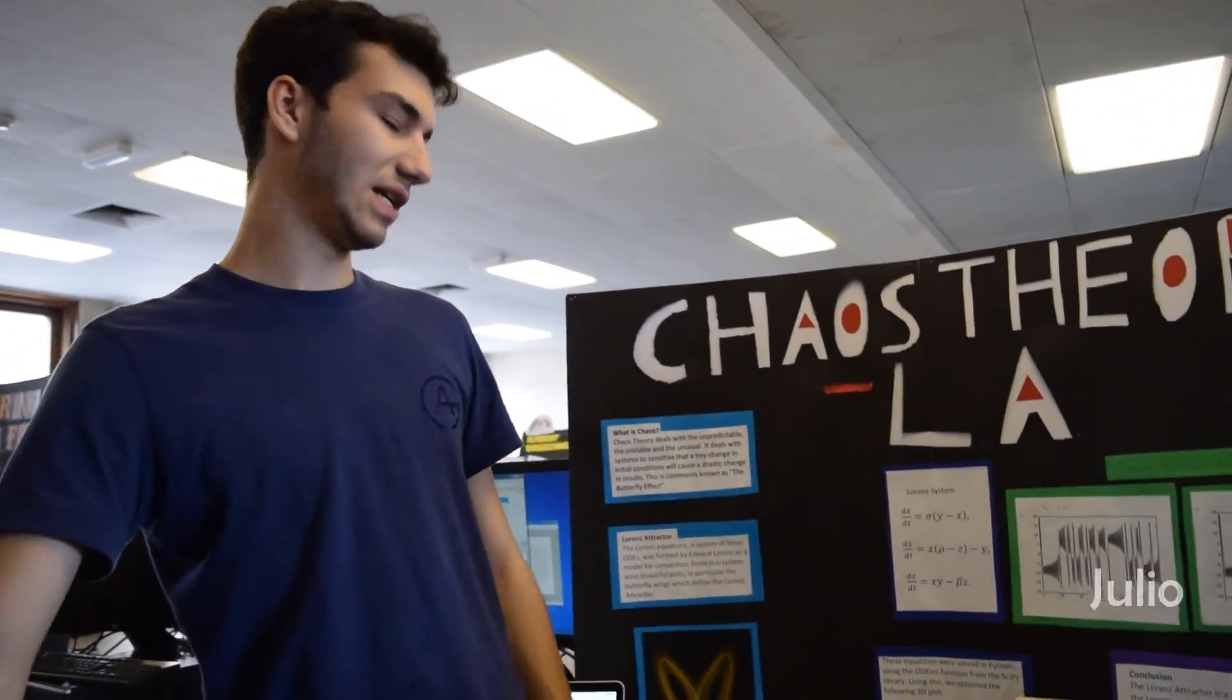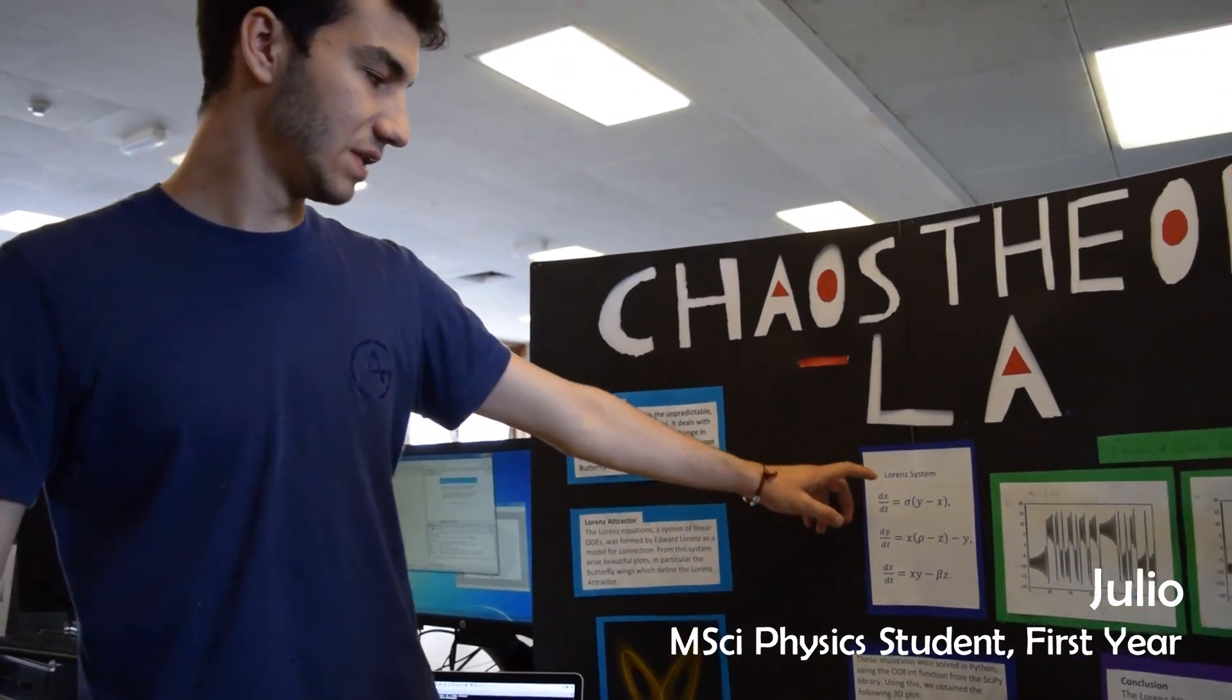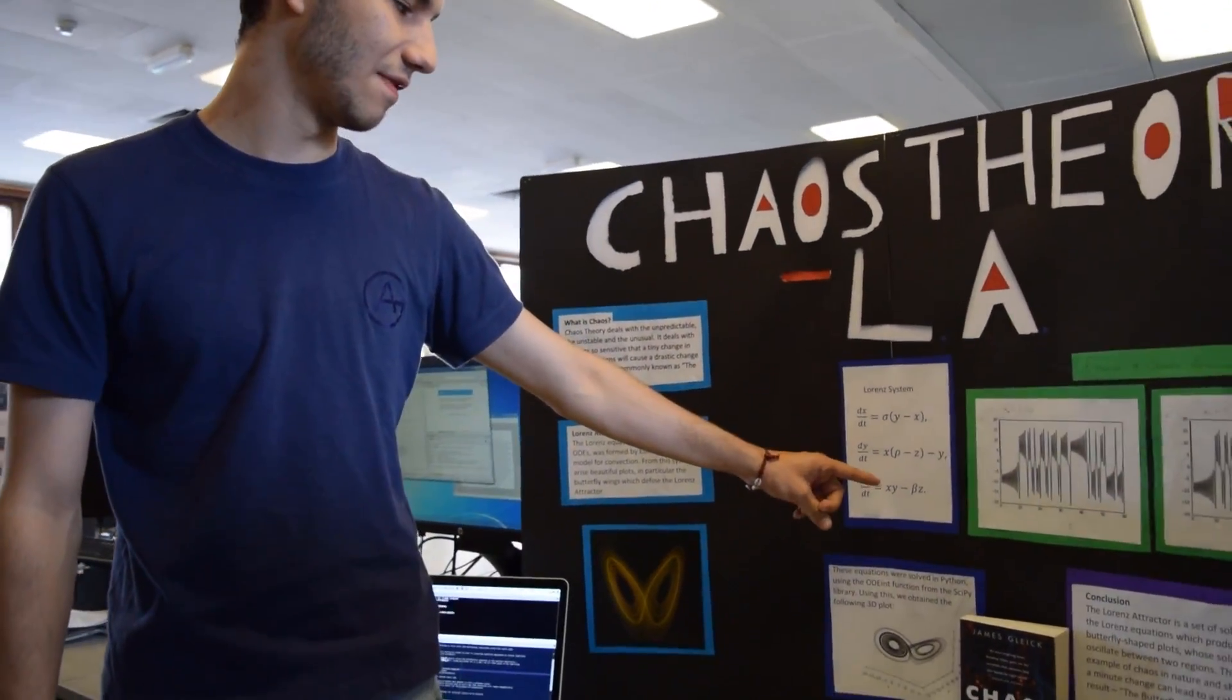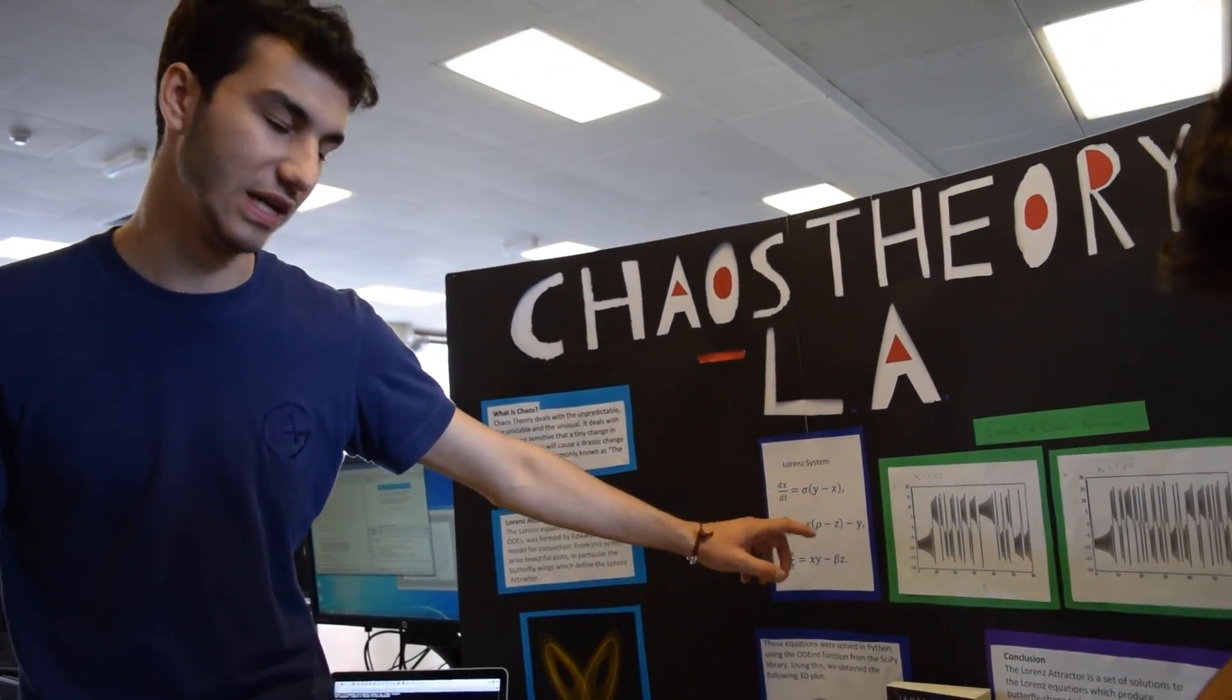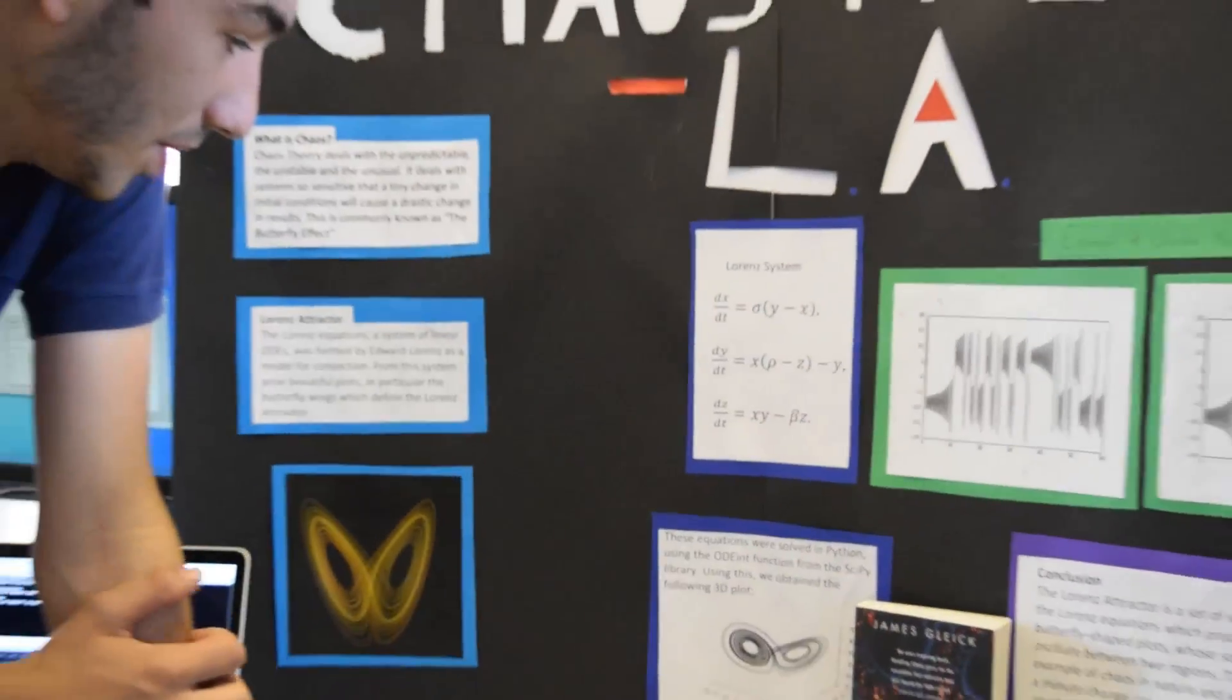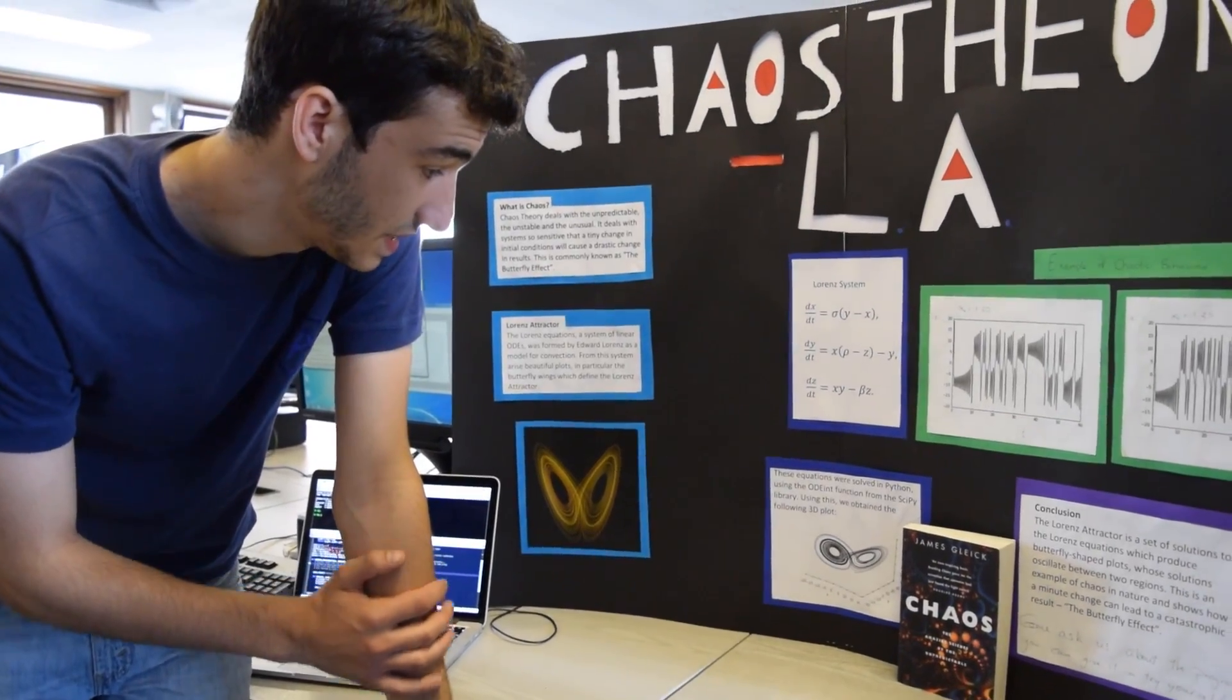So basically when we talk about the Lorenz system, we generally refer to the system of coupled linear differential equations. And if we look at it, we see they're all three coupled, and they all share at least one variable. But solving this analytically can be a bit of a pain, because the solution is not quite as straightforward as it might seem.